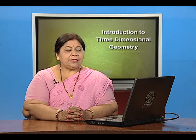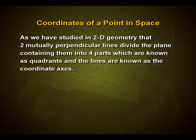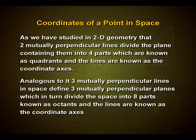Now let us understand how we write down the coordinates of a point in space. As we studied in two dimensional geometry, two mutually perpendicular lines divide the plane into four parts known as quadrants, and the lines are known as the coordinate axes. Analogously, three mutually perpendicular lines in space define three mutually perpendicular planes, which in turn divide the space into eight parts known as octants, and the lines are known as the coordinate axes.